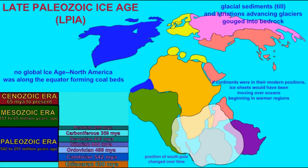In North America, warm coal swamp forests were laying down coal beds. So this was another piece of evidence that continents were once joined.